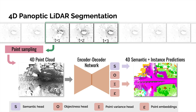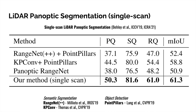We first evaluate our method on the existing single-scan panoptic segmentation benchmark. This is a special case of our method where the temporal window size is 1. In this setting, our unified single-scan panoptic network significantly outperforms existing methods in terms of panoptic quality and mean intersection over union. Several baselines use separate networks for semantic segmentation and object instance detection, fusing results in a post-processing step.